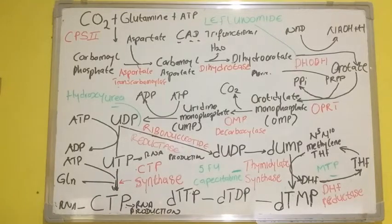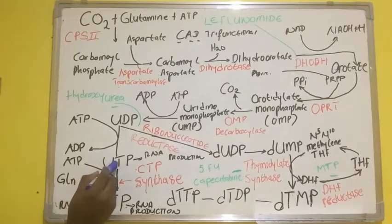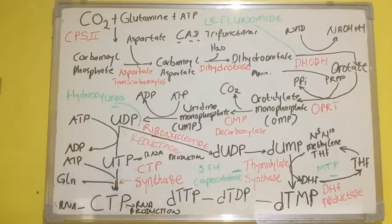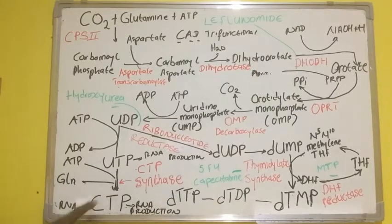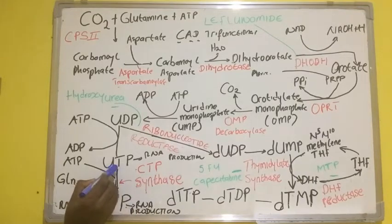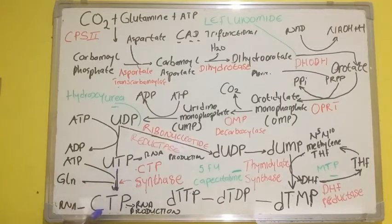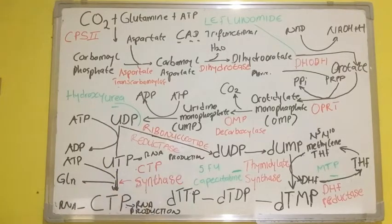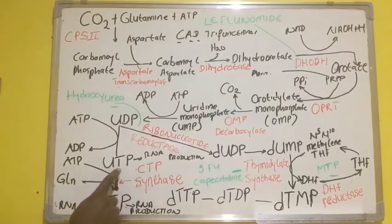CTP also leads to RNA production. At this point, ATP and glutamine come in to assist in this reaction. The enzyme that catalyzes the conversion of uridine triphosphate to CTP is called CTP synthase. This CTP synthase converts UTP to CTP.